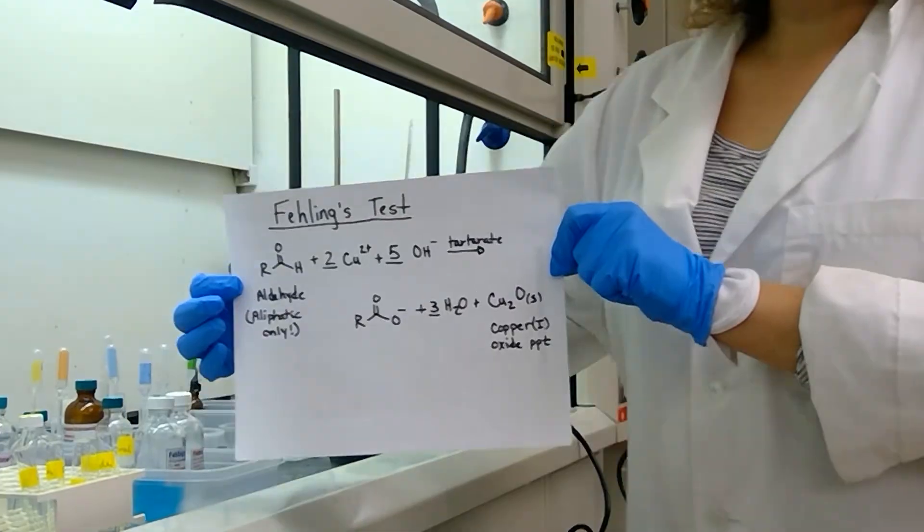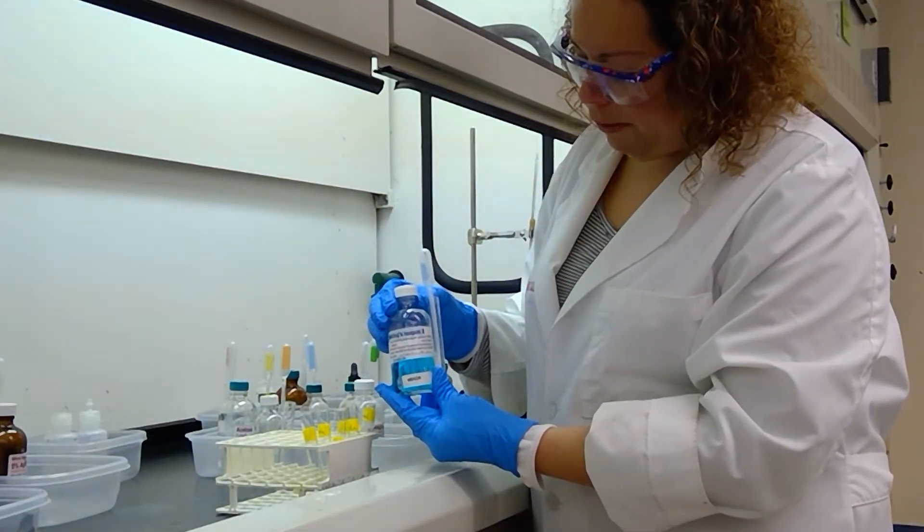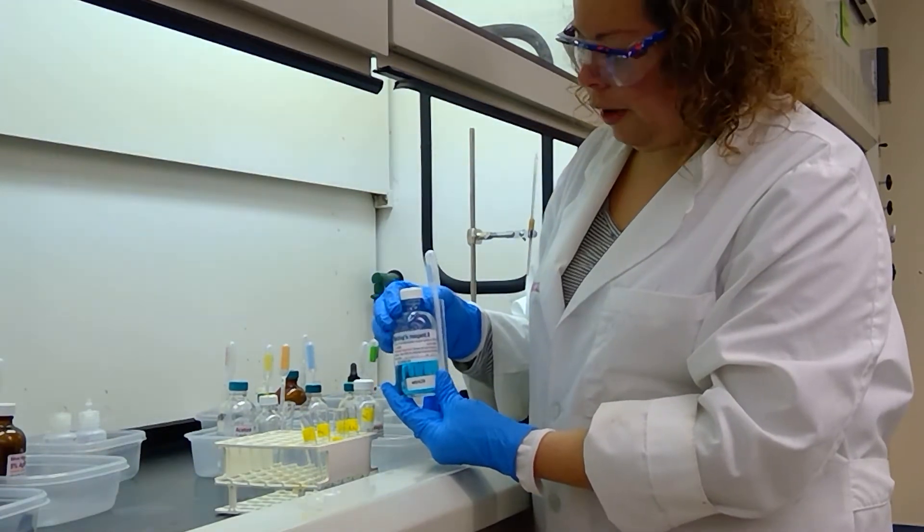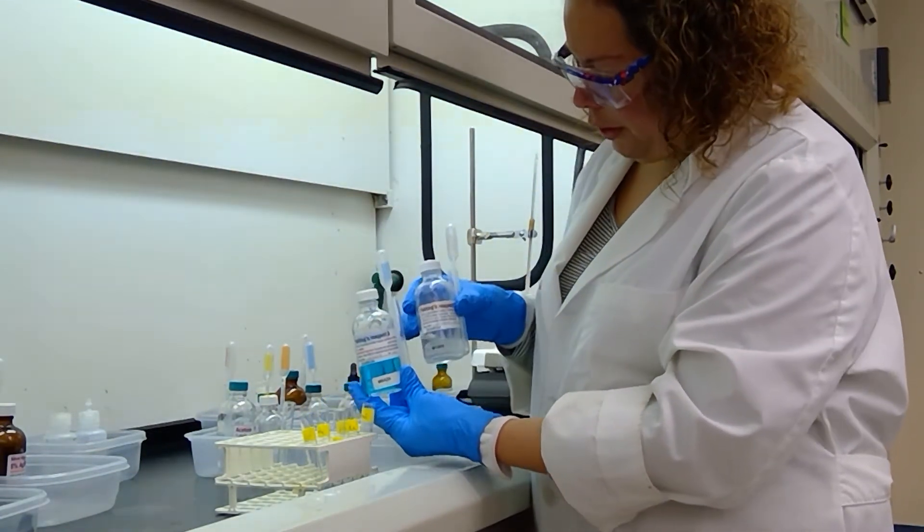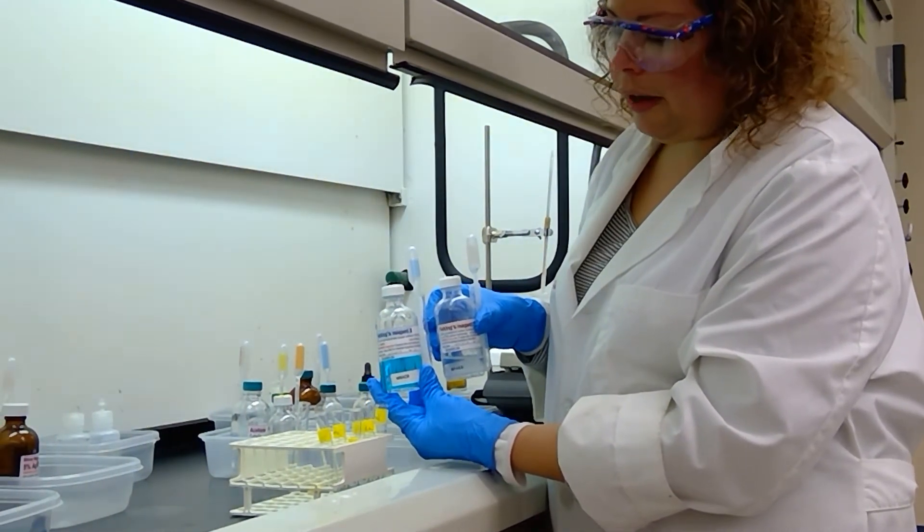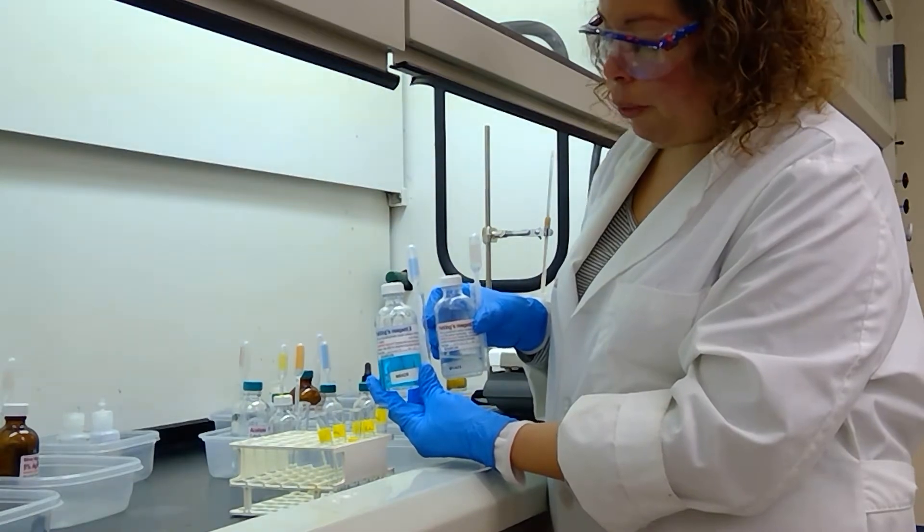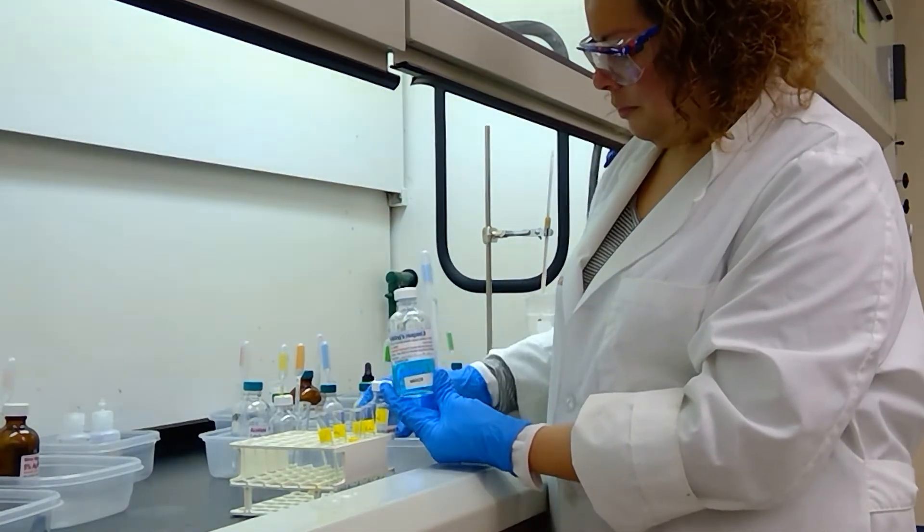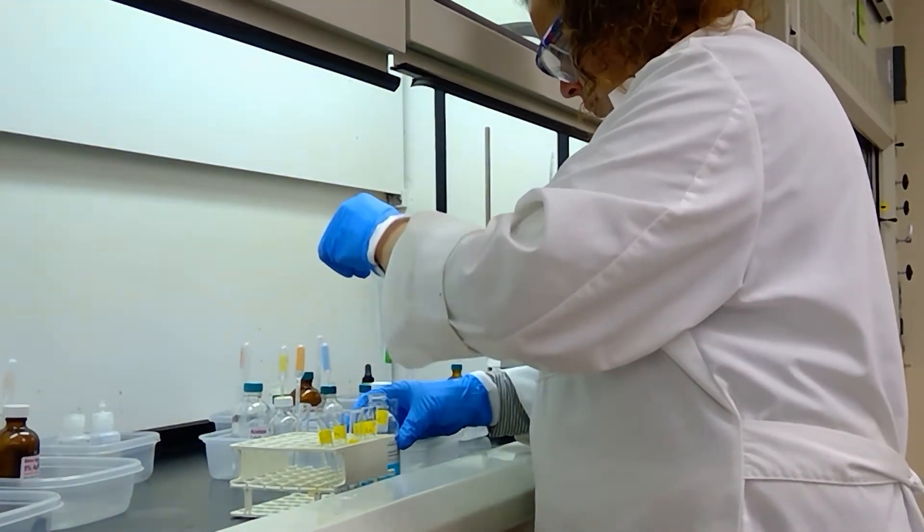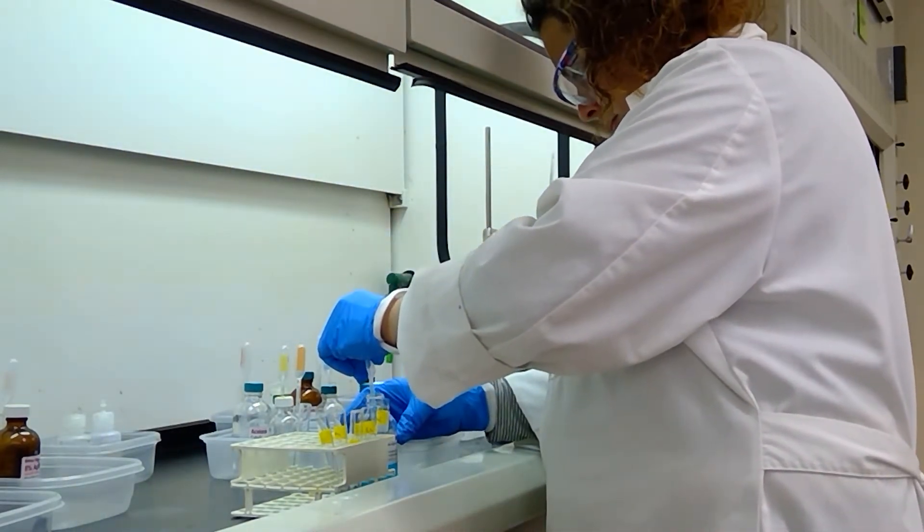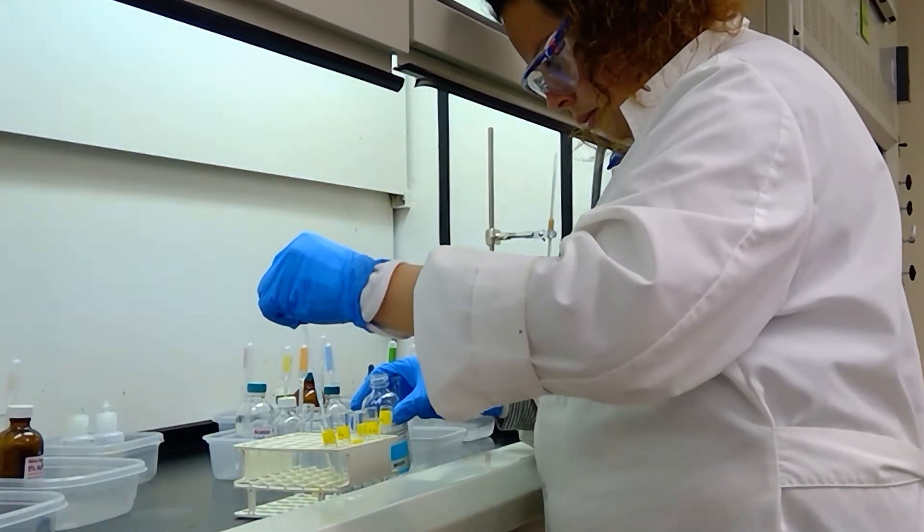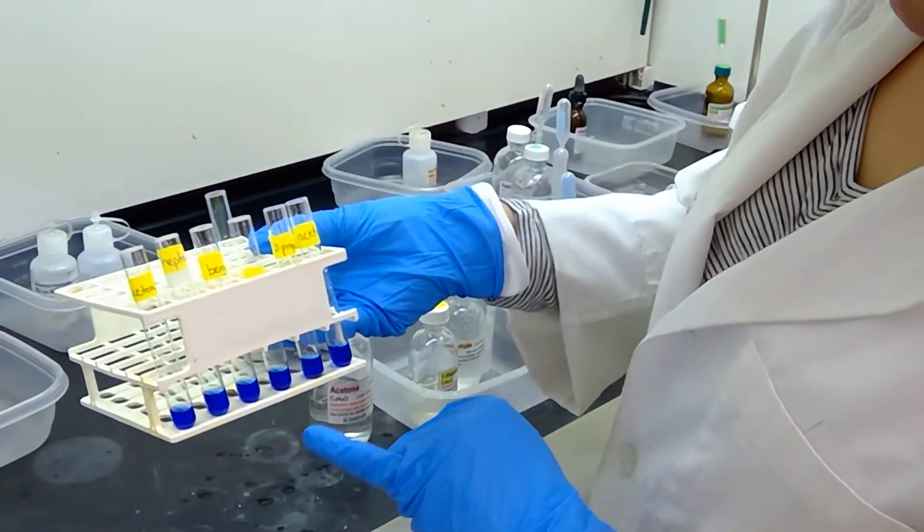We are first going to add 0.5 milliliters of Fehling's reagent A to each of our test tubes, and then we will follow that up with half a milliliter of Fehling reagent B. These two compounds cannot be pre-mixed because they will cause a reaction before we want them to.